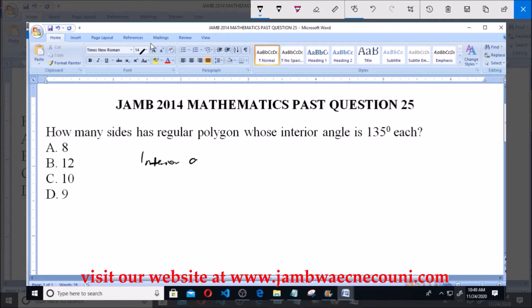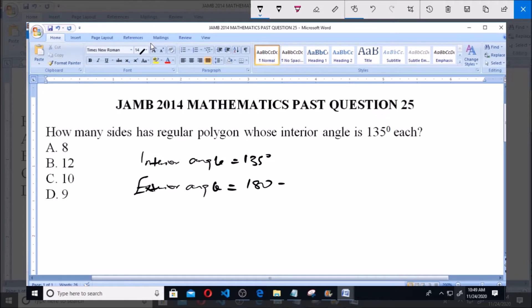If one interior angle equals 135 degrees, then one exterior angle will be 180 minus 135 degrees, which equals 45 degrees.